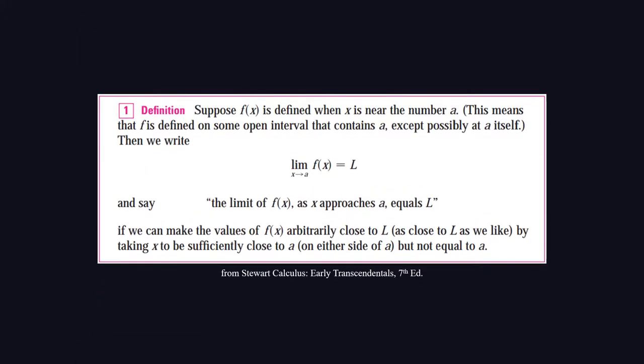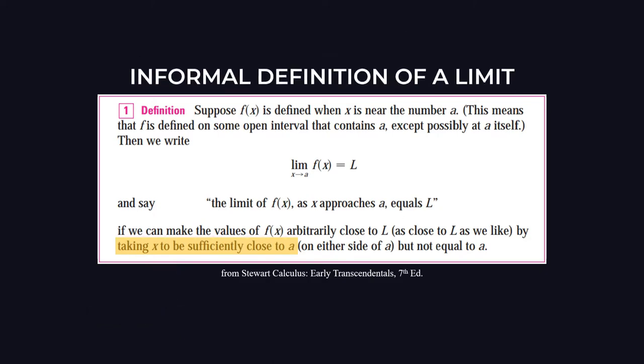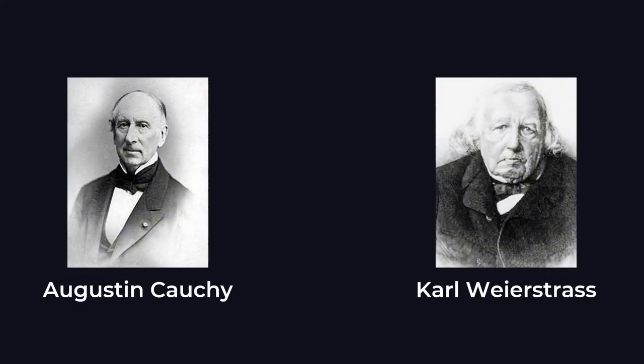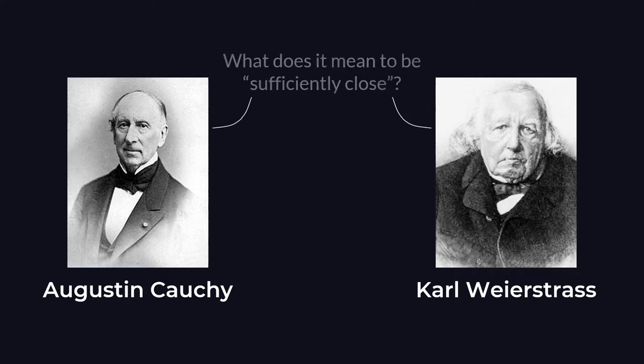But there is a problem here. Because the words 'sufficiently close' are somewhat vague, this definition is often called the informal definition of the limit. Which is why mathematicians like Cauchy and Weierstrass came up with a more precise definition of the limit, one that mathematically defines what it means to be close.